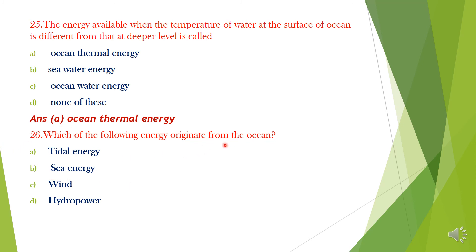Question 26. Which of the following energy originate from the ocean? A. Tidal energy, B. Seawater energy, C. Wind, D. Hydro power. Answer is option A, Tidal energy.